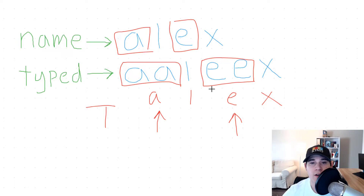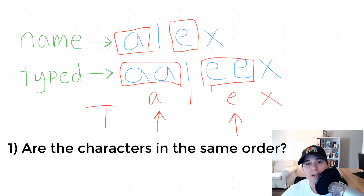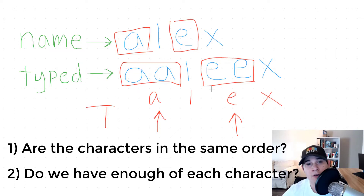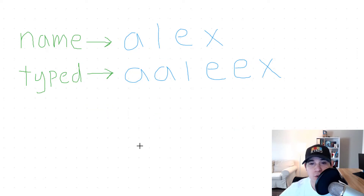We can boil this question down into two different questions. The first one is: are all the characters in our typed string happening in the same order as the characters in our name string? And the second question is: do we have the amount of characters that we need in every step to match our name string? If that's not making sense so far, it's okay — I'm going to be going through a full example.